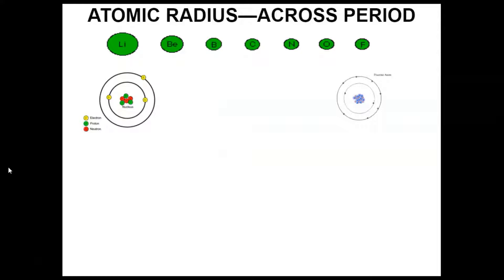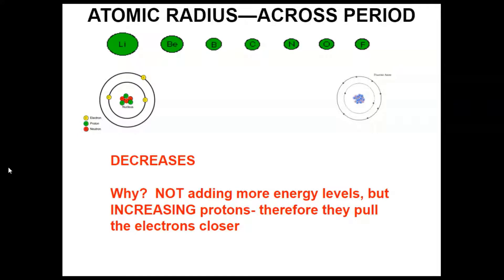As we go across a period, this is a little bit less intuitive. As I go from left to right across a period, the atoms actually get smaller. This shows period 2 from lithium to fluorine, and they're actually getting smaller, which is really surprising because you might think you're adding more stuff to them — shouldn't they be getting bigger? Well, consider that we're not adding any new energy levels.